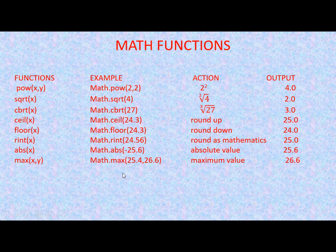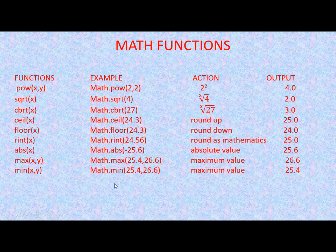The next function is max(x, y) — this returns the maximum value of two given numbers. For example, with numbers 25.4 and 26.6, the maximum value is 26.6. The next function is min(x, y) — this returns the minimum value. The minimum of 25.4 and 26.6 is 25.4, so this function will return 25.4.